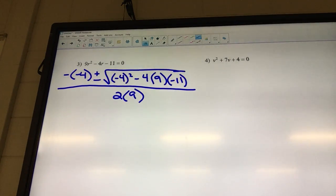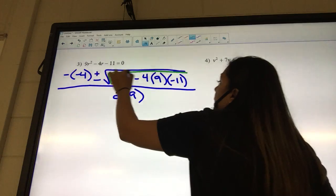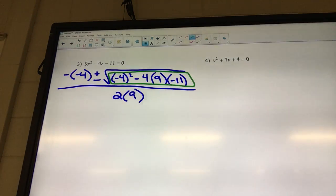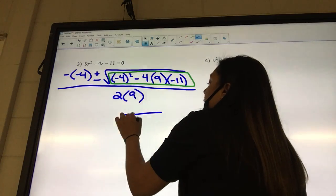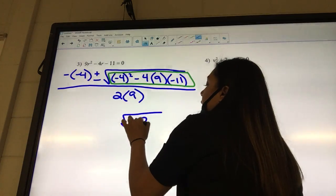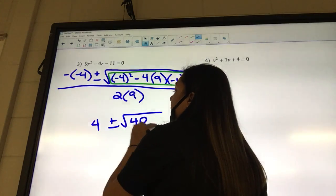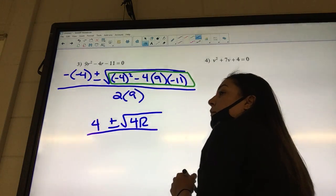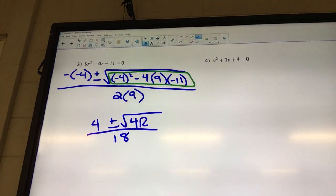Okay, everything underneath the square root, type that in. 412. And then what are we going to get for the outside over here? Positive 4. And then the bottom? 18. Okay, check the square root of 412. Does it simplify or not?